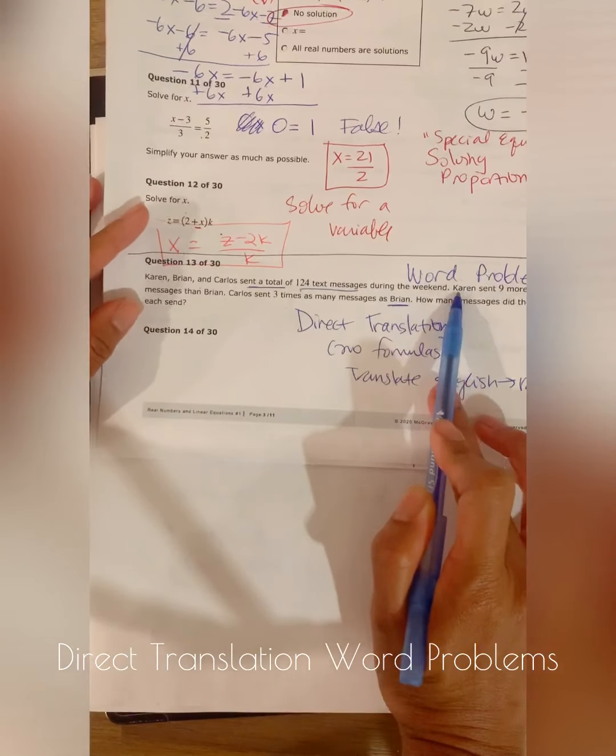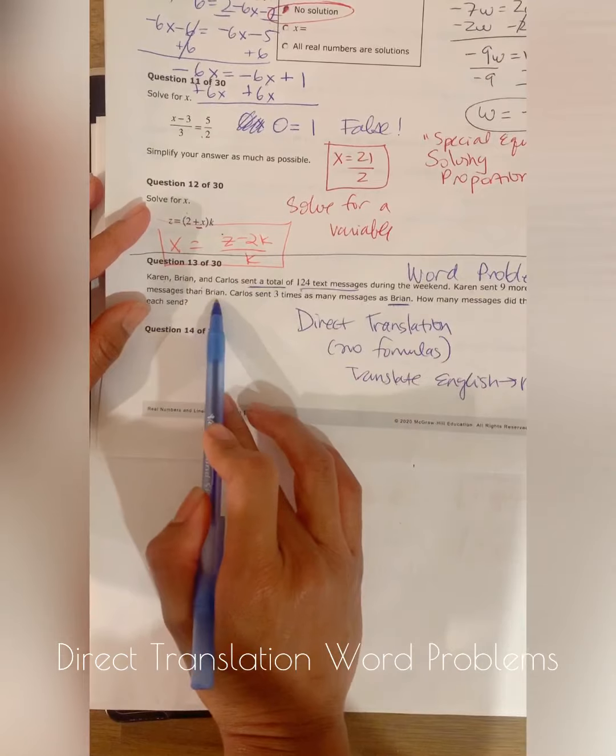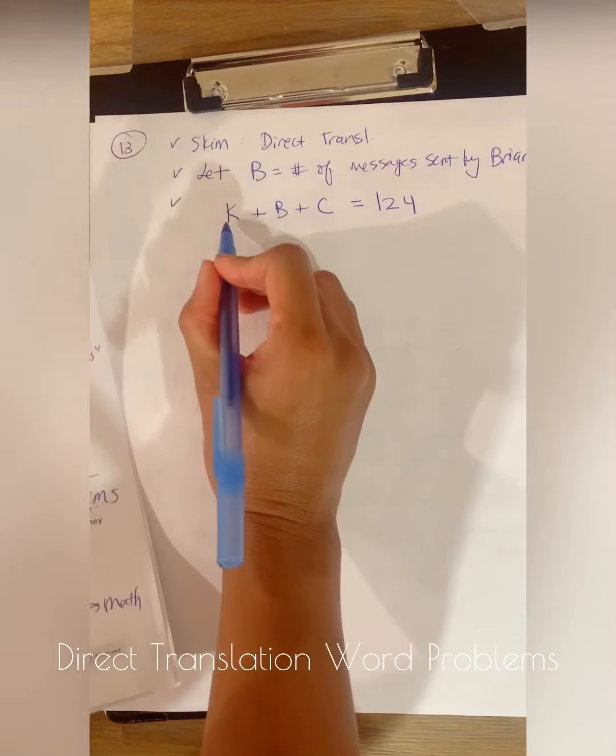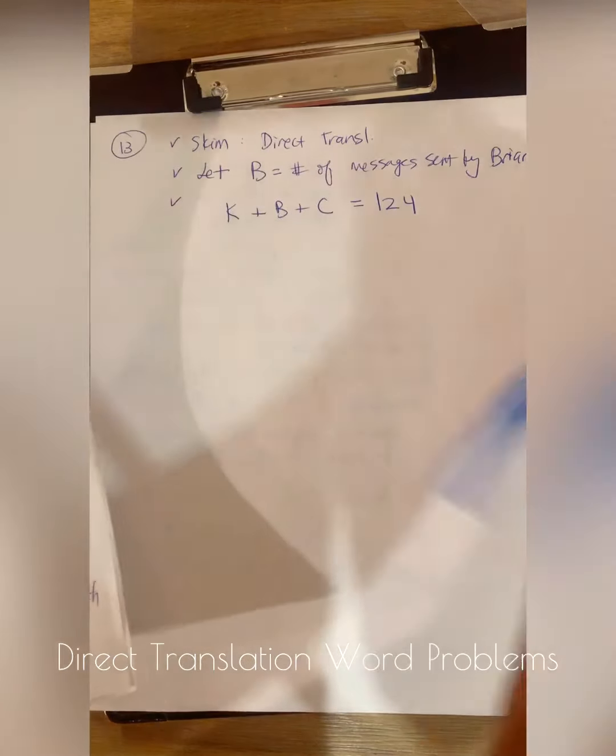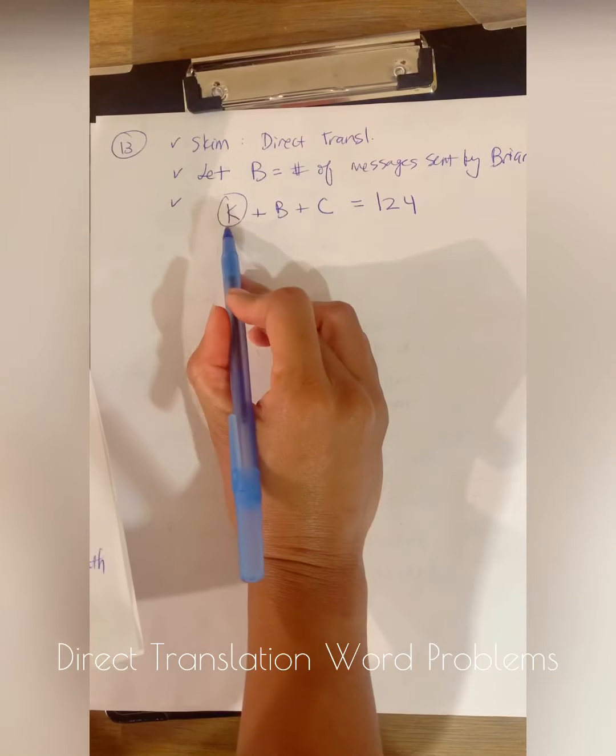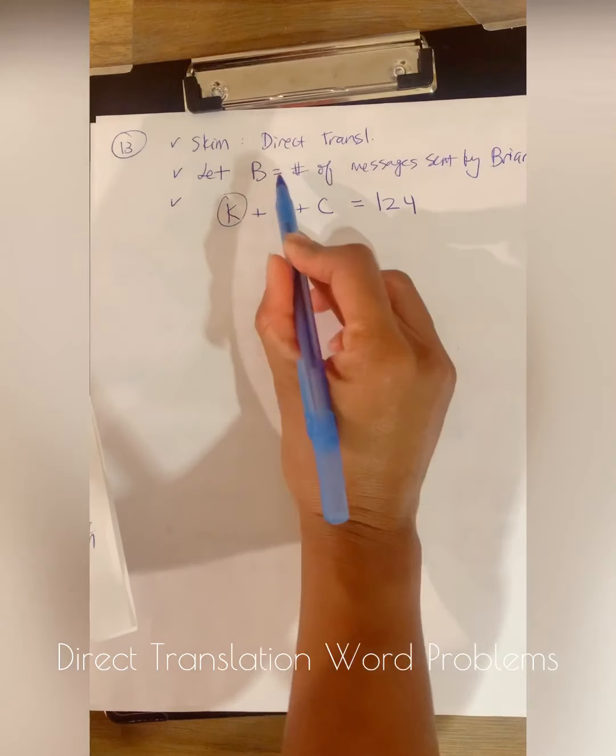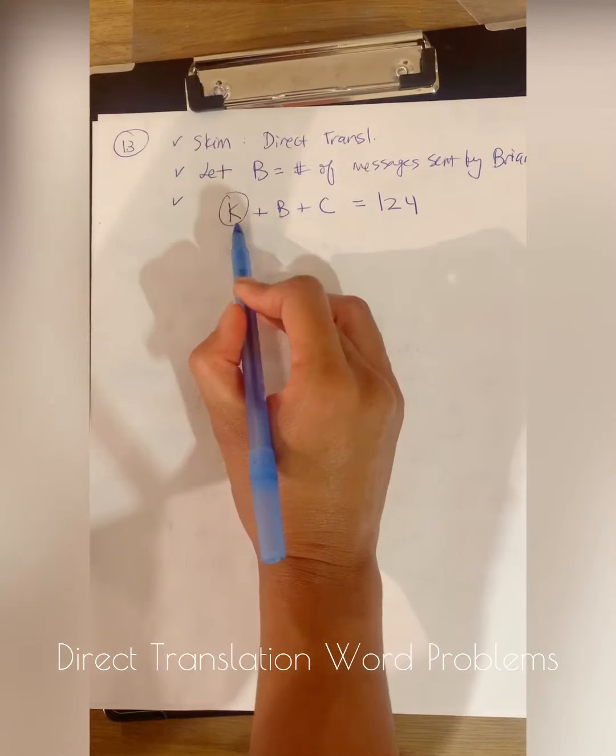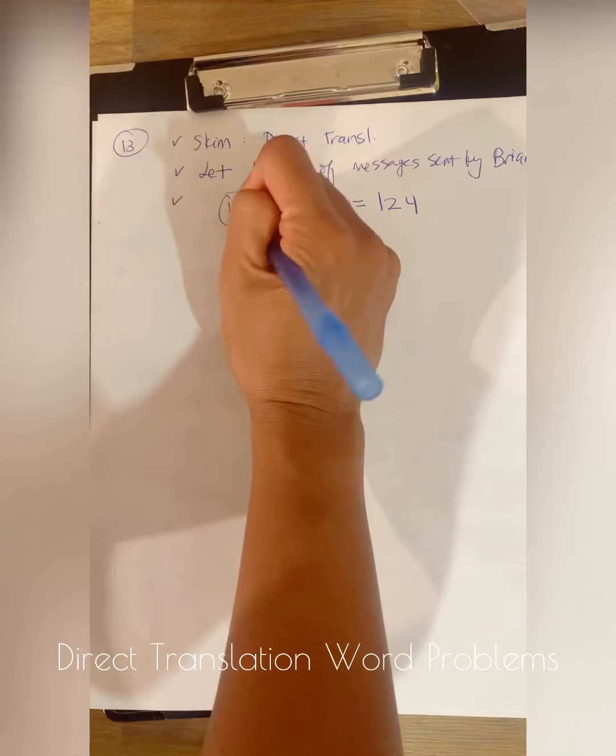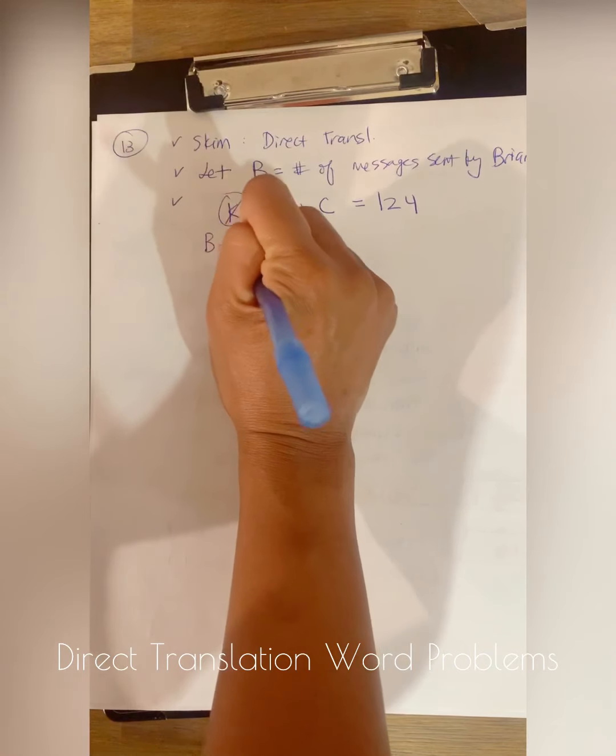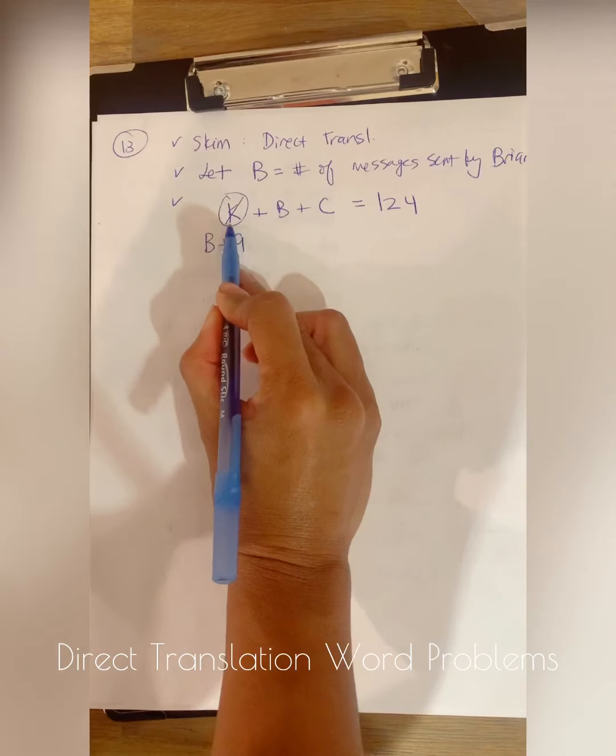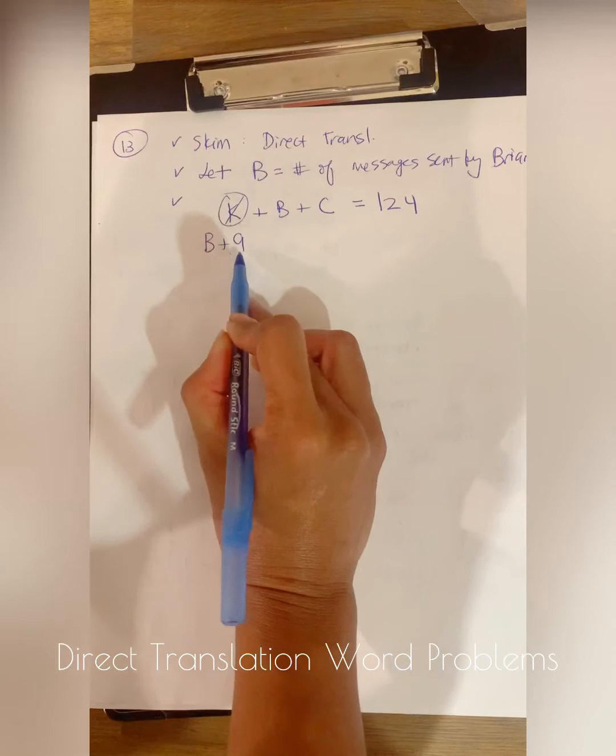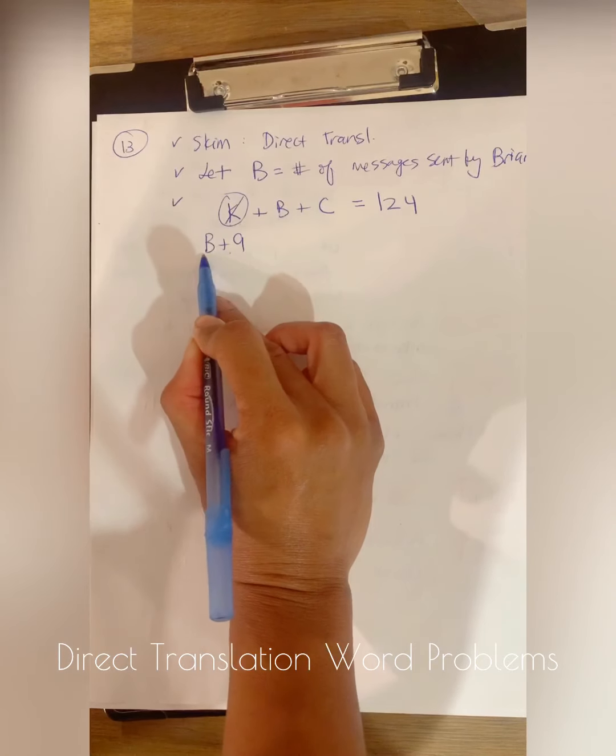So Karen sent nine more messages than Brian. So this K here, instead of putting the K, I know that Karen represents Brian plus nine, right? Because Karen sent nine more than Brian. So instead of putting K, I'm going to put Brian plus nine. That's what Karen is. Karen's number of texts is nine more messages than Brian's.